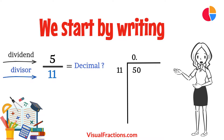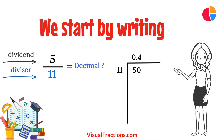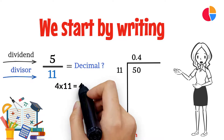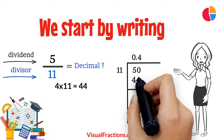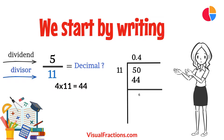11 goes into 50 4 times. We place 4 in the quotient, multiply 4 by 11 to get 44, and subtract this from 50, leaving a remainder of 6.